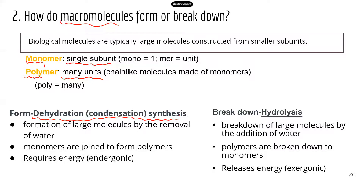TEAS uses both names, so that's why both are listed. In dehydration synthesis, you remove a water molecule before you can connect the two subunits. Just remember: in dehydration synthesis or condensation synthesis, you need to remove water to link the two subunits. Dehydration synthesis is an endergonic chemical reaction, which means the reaction requires energy input — you need to provide energy for the reaction to proceed.